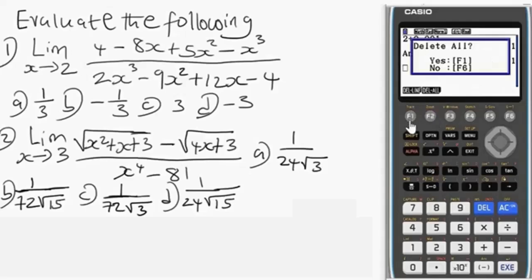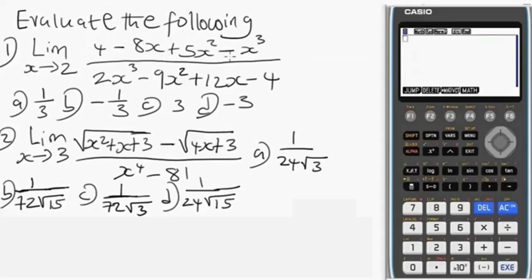Now that we have done this, let's delete everything here. Delete all, press F1. So we are good to go, let's input this question exactly as we have it here. It's a fraction, make use of this fraction button. So we have 4 minus 8X ALPHA X, plus 5X square ALPHA X square, minus X cube ALPHA X cube, make use of this power function.